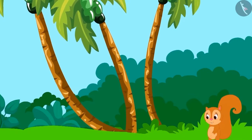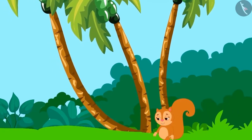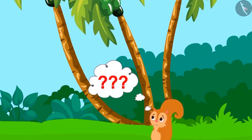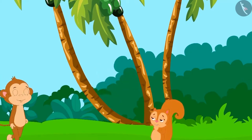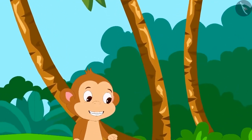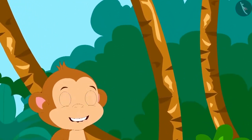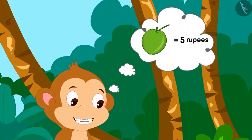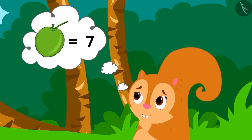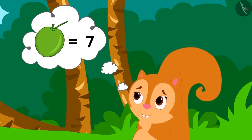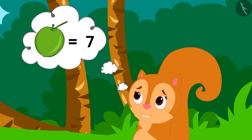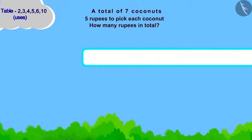Now, Chanda had to pick coconuts from a coconut tree. But the tree was very high, so she called Babban for help. Babban told Chanda that he would take five rupees for picking each coconut. Chanda had to get a total of seven coconuts picked. Now, Chanda is thinking — how much money will she have to pay to Babban?